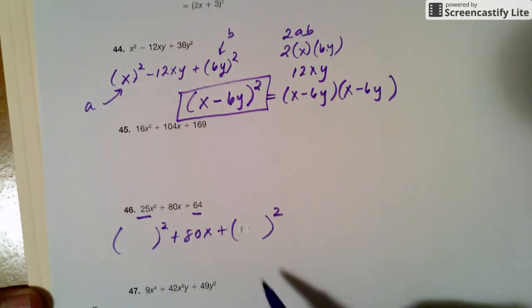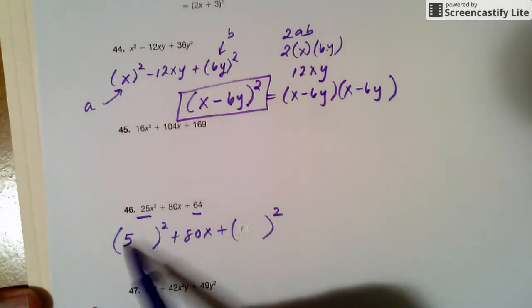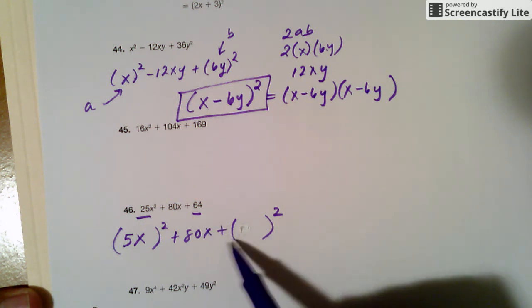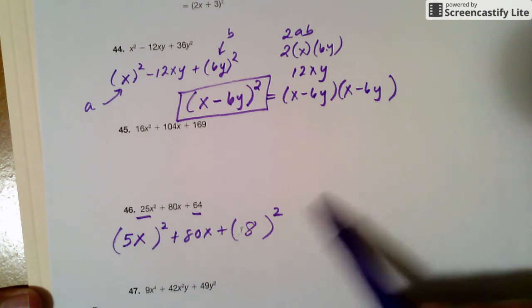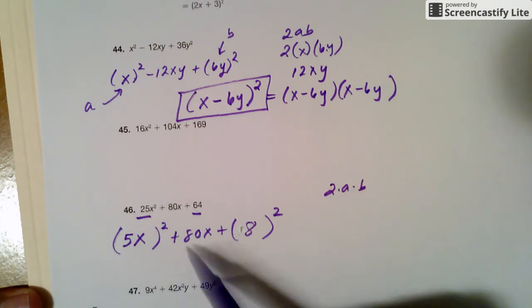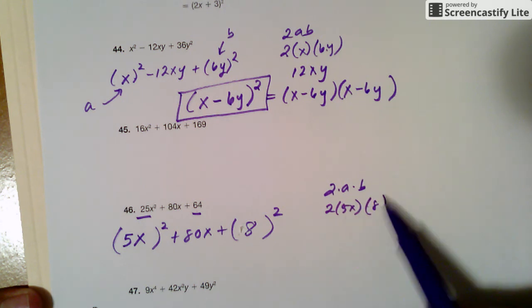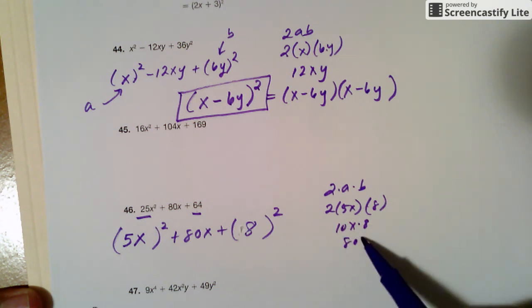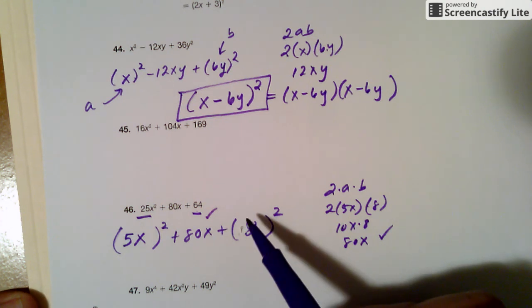And then I'm going to rewrite that. 25, well, that's 5, and then there's an x there. And then this piece is something square to get 64, and that's 8. So just to check if 2 times a times b is actually 80x here. So 2 times 5x times b, well, 2 times 5 is 10, and then 8 times 10 is 80, and then there's an x. So that works out.